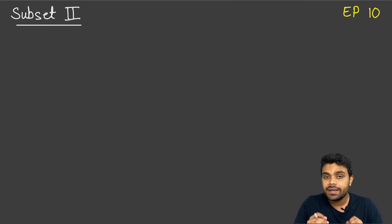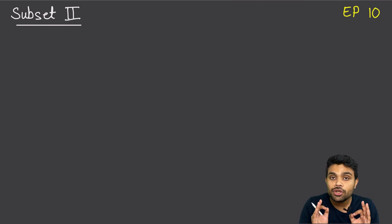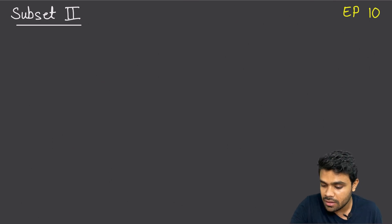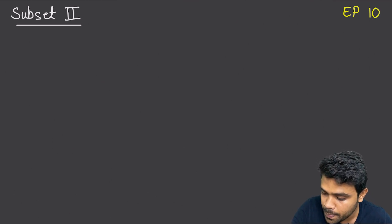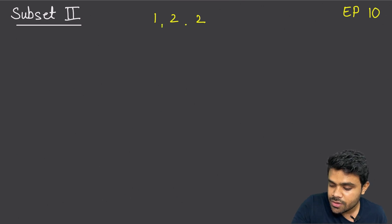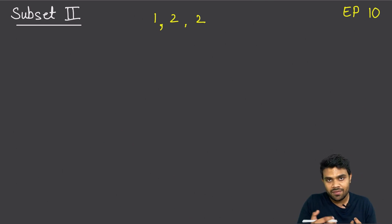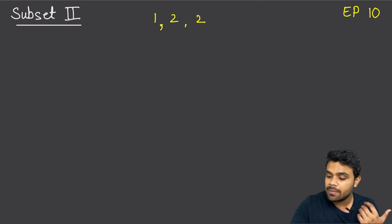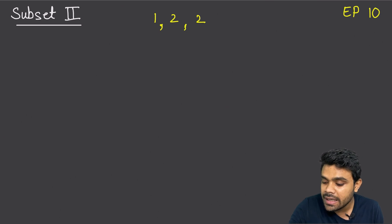But when there are repeating elements, the number of unique subsets reduces. For example, let us take the array [1, 2, 2]. There are three elements. If they were unique, we would generate 2 raised to the power 3, which is equal to 8 subsets. But now you will see that the number of unique subsets is going to get reduced.